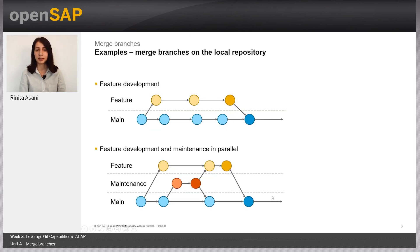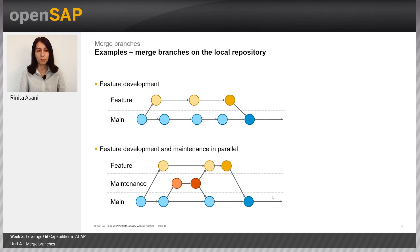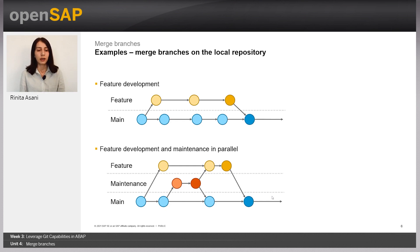Let's see some examples. The first example is feature development: you create a new branch called 'feature', do your feature development there, and when you are done you simply merge it to the main branch. A second example: in addition to feature development, you also want to fix bugs, so you create a maintenance branch for bug fixing. When done, you merge it to the main branch and also merge it to the feature branch.